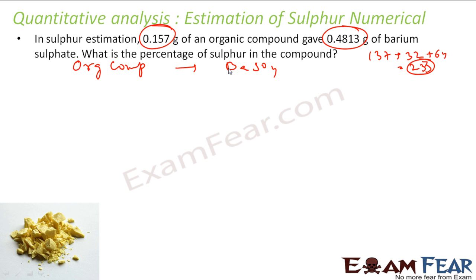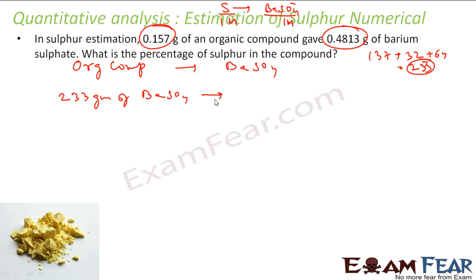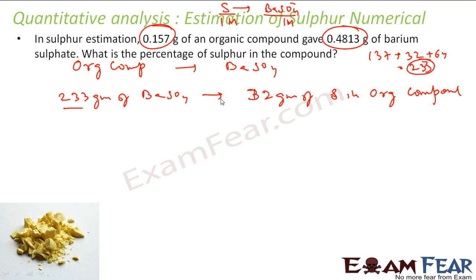From the balanced equation, one mole of sulfur gives one mole of barium sulfate. So 233 grams of barium sulfate implies one mole, which is 32 grams of sulfur in the organic compound. Therefore, 233 grams of barium sulfate implies 32 grams of sulfur in the organic compound. If we have one gram of barium sulfate, this implies 32/233 grams of sulfur.